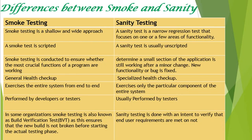Smoke testing is like a general health checkup, but sanity testing is like a specialized health checkup. The main objective of smoke testing is to exercise the entire system from end to end, but in sanity testing only a particular component of the entire system is tested. Smoke testing is mainly performed by developers or testers. In some organizations, smoke testing is also known as Build Verification Test, because whenever a new build is released, we have to make sure that the build is not broken and is ready for the actual testing phase.